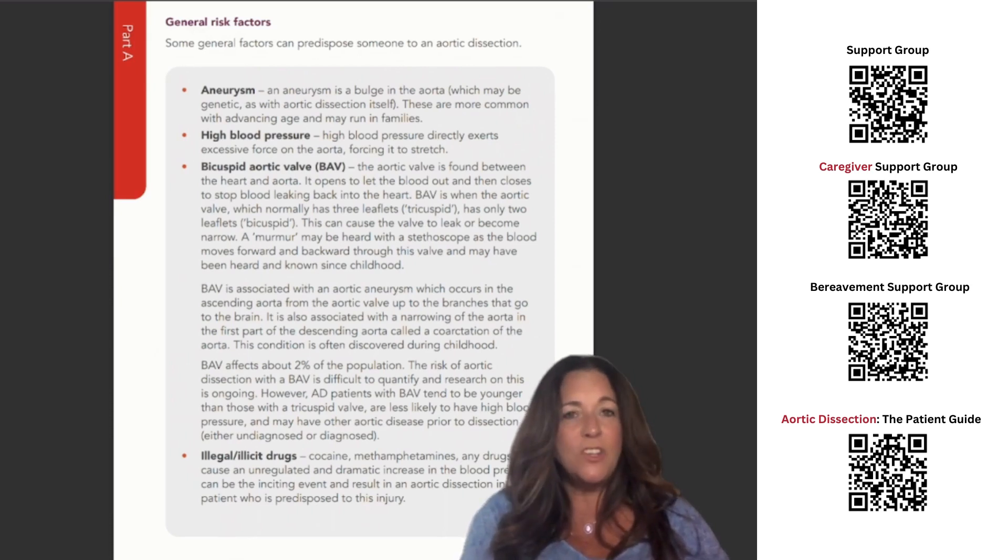However, AD patients with BAV tend to be younger than those with a tricuspid valve, are less likely to have high blood pressure, and may have other aortic disease prior to dissection, either undiagnosed or diagnosed.